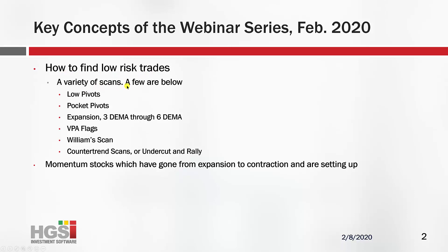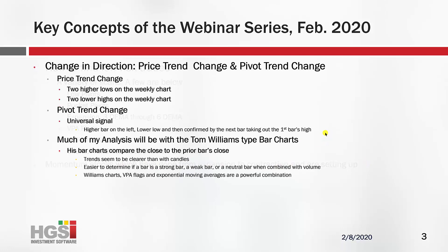How to find low-risk trades: a variety of scans — low pivots, pocket pivots, expansion, VPA flags, Williams scan, counter-trend scans or undercut-and-rally as Gil calls them, momentum stocks that have gone from expansion to contraction and are setting up again. This is primarily what I'll be looking for. And change in direction: price trend change and pivot trend change.